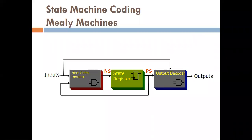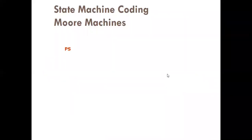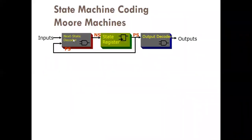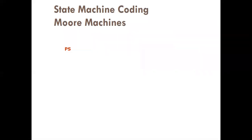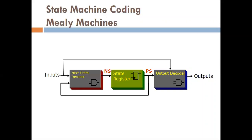Dear students, today we are going to learn about Mealy machines. We have two state machines: one is called the Mealy machine and another is called the Moore machine. The difference between them is: if the input is directly connected to the output, it is called the Mealy machine. In the Moore machine, the input is directly connected with the output decoder. Today we are going to learn about the Mealy machine.